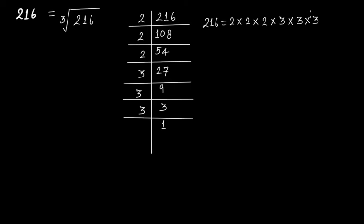Now, in the case of square numbers when we find the square root, we make pairs of prime factors. But in the case of cube roots, we always take prime factors three times. So this is three times and this is three times. It means that if we have to find the cube root of 216, we take the prime factors three times.